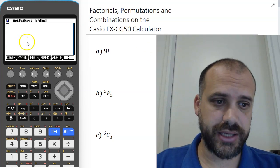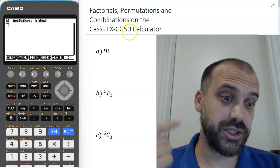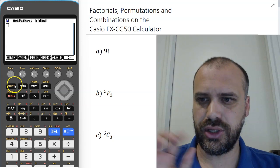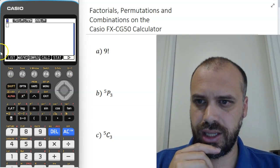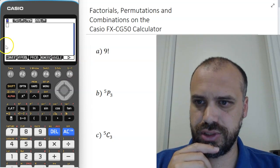Alright, we'll knock this over real quick. We've got a Casio and we're going to do factorials, permutations, and combinations. The way to do it is to press the option button here and then click across until you see